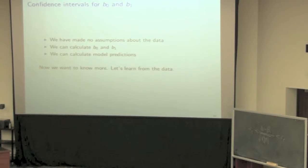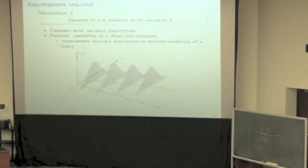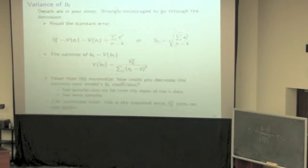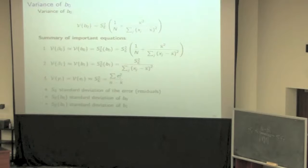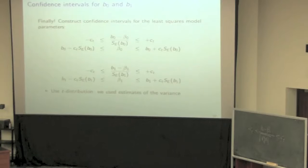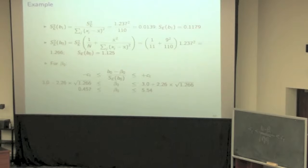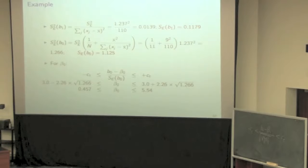Our whole goal here is to set up the confidence interval and find lower and upper bounds for beta-one, and we repeat the same exercise for beta-naught. The confidence interval is derived in the slides, and the software will do these calculations for us. But before we get to that point, we have to make some strong assumptions.